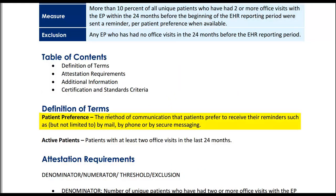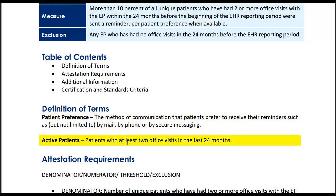Let's check a couple of terms from this measure. Patient preference is the method of communication that a patient prefers to receive their reminders, such as but not limited to by mail, by phone, or by secure messaging. Active patients are patients with at least two office visits in the last 24 months.